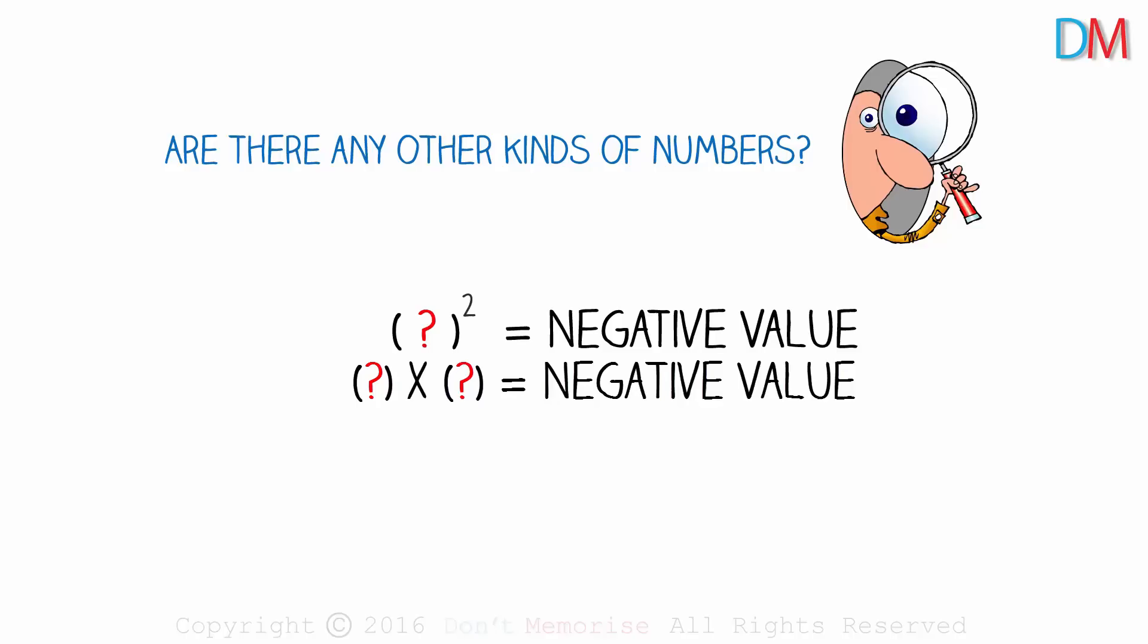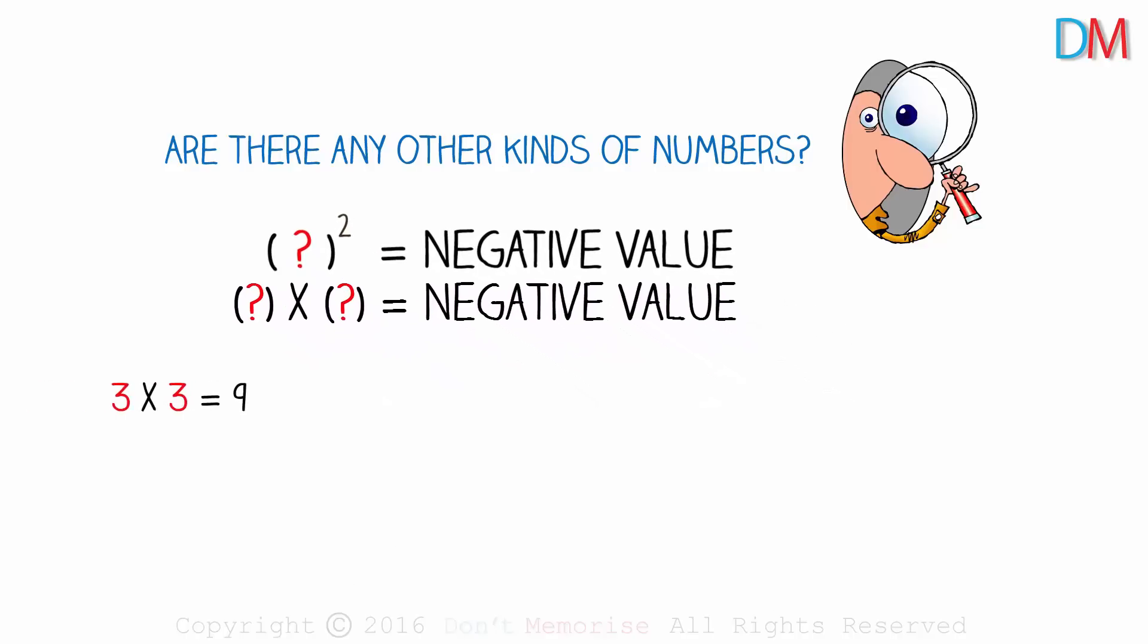You'd have probably tried a few options. 3 times 3 is 9, positive. Negative 5 times negative 5 is 25, again positive. Negative root 3 times negative root 3 is 3, positive again. No luck!